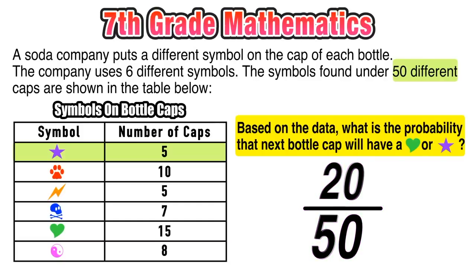Now we want to translate this into probability. We can do that by simplifying the fraction 20 over 50, which we can do pretty easily by canceling out those zeros.